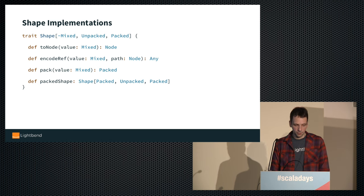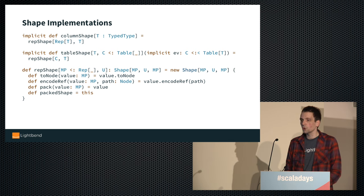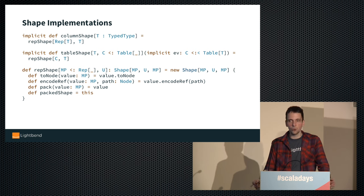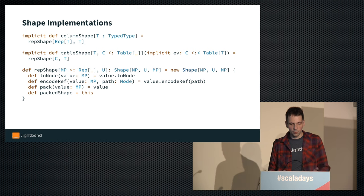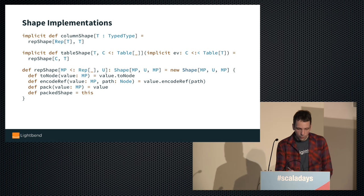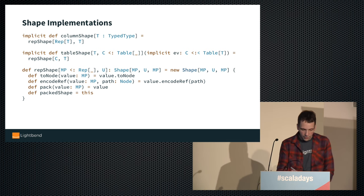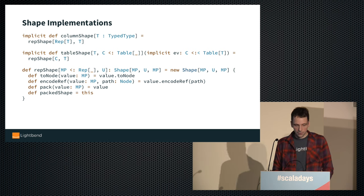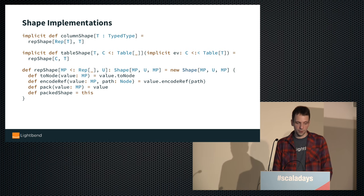Now let's look at the Shape implementations. A Shape generalizes Rep, and since Rep had toNode and encodeRef, Shape gets the same two operations — but since a shape represents a type rather than a specific value, these take values as additional parameters. Shape also has pack and packedShape: for a mixed value, pack returns the packed value, and packedShape returns the matching shape. The simplest shape is RepShape — since Shape generalizes Rep, whenever we already have a Rep, it's trivial. toNode delegates to value.toNode, encodeRef to value.encodeRef, and pack and packedShape are identity operations.